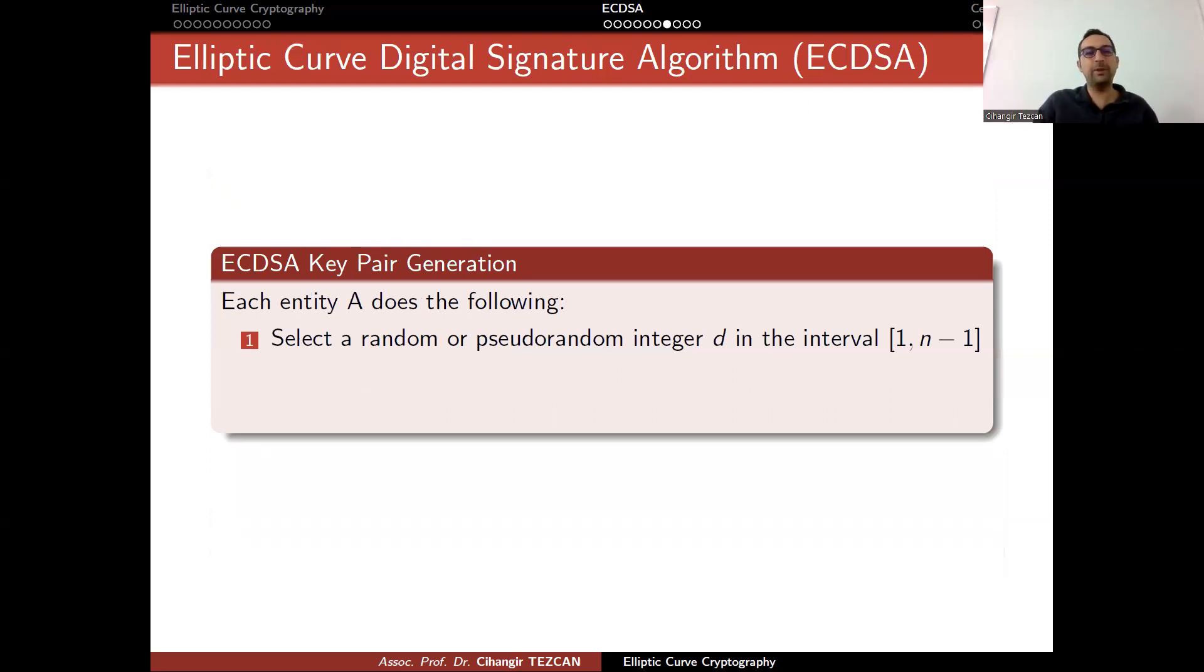Assume that you check your parameters, the domain parameters are correct. Now, you want to create your key pair. This means that for cryptocurrencies, you are creating a Bitcoin or Ethereum address. It works like this. When you press to create a Bitcoin account, or if you want to use this digital signature for signing something else, what you do is as follows. You randomly select an integer d between 1 and n minus 1. Of course, choosing 1 should not be suggested.